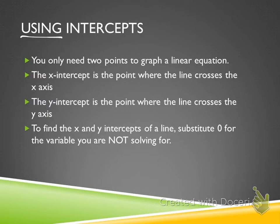The first point is: how many points do you need to graph a linear equation? Two. Yesterday, how many points did you graph? Five. You graphed five. So technically, you only need two in order to determine the direction of the line.